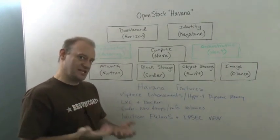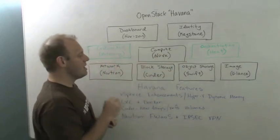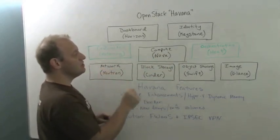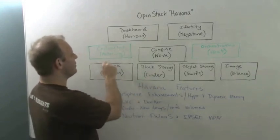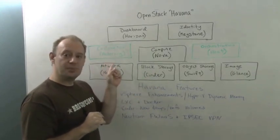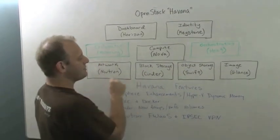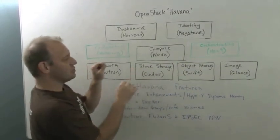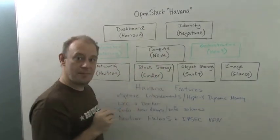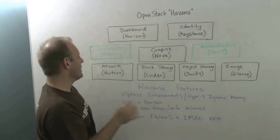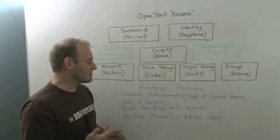We've done an OpenStack Basics video in the past about how all of these work together. But new in Havana, we've actually added some additional projects as well. There's Ceilometer, which is Metering, and then Orchestration, which is Heat. So what we're able to do is really plug everything together and do some automation through the orchestration layers and some metering, so that you get more of a complete infrastructure as a service offering.